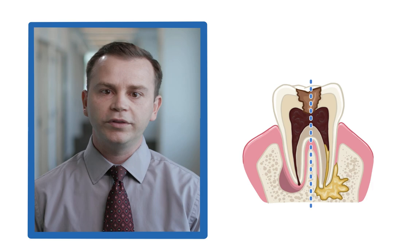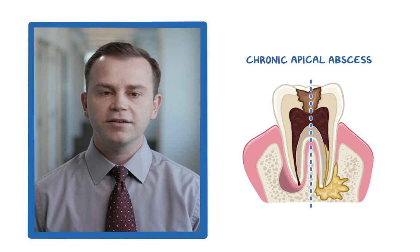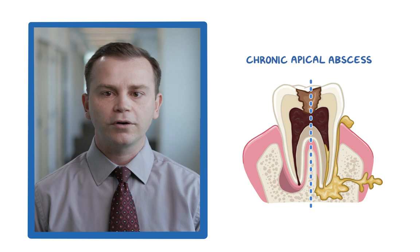When the purulence is confined to the bone or soft tissue, this is known as acute apical abscess. Chronic apical abscess occurs when drainage of the pus is established, such as through the gingival sulcus, onto the gingiva, into the maxillary sinus, or to the facial skin.